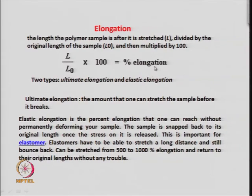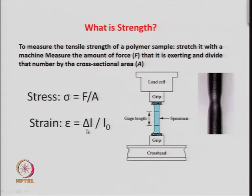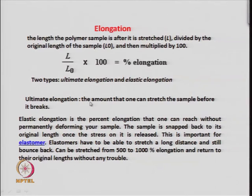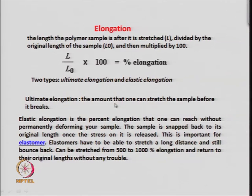Percentage elongation is given by the change in length divided by the initial length, multiplied by 100. There are two types: ultimate elongation, which is how much you can stretch the sample before it breaks, and elastic elongation, which is the percentage elongation you can achieve without permanently deforming the sample — how much it can elongate and still return to its original shape.